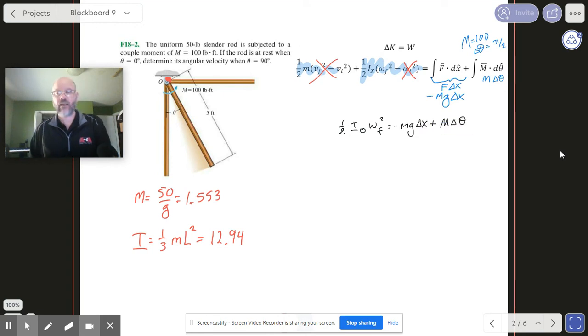Okay, so gravity's doing negative work on it because it's going up, so you can imagine if it did have some speed it would have to slow down. But our moment is twisting the heck out of this thing, and so that's going to try to increase its speed. Now once you put in all your numbers, mg delta x plus M delta theta, what you're going to get for the amount of energy put into the system is 32.08.